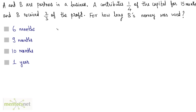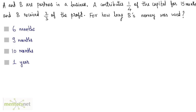A and B are partners in a business. A contributes 1 fourth of the capital for 15 months and B received 2 thirds of the profit. For how long was B's money used? Let the total profit be P. B received 2 thirds of this total profit, which means B's share of profit is equal to 2 by 3 P.